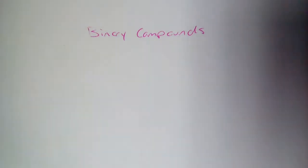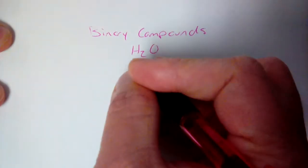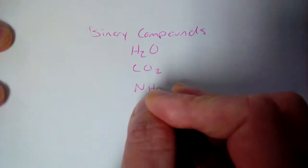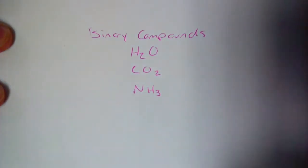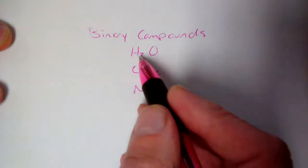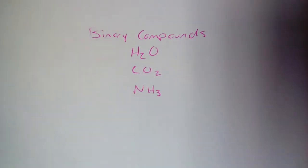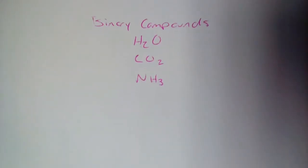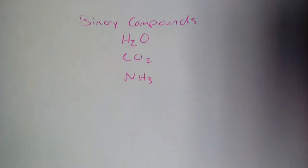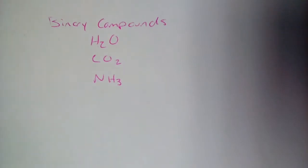Binary compounds contain only two elements — like H2O, CO2, NH3, and so on. Each of these contain only two elements, and the vast majority of what we do in CP chemistry when it comes to covalent bonding should be about these binary compounds.